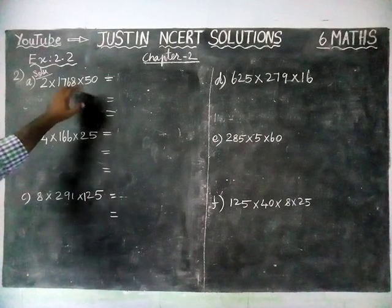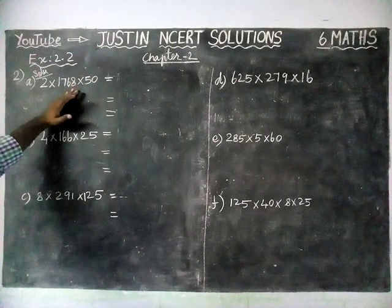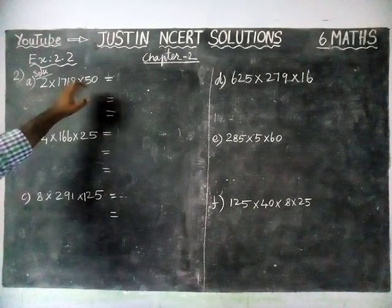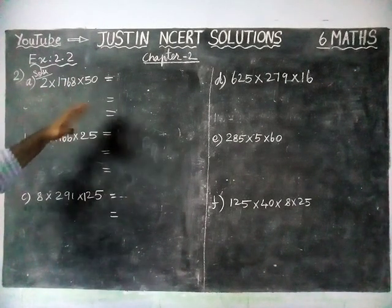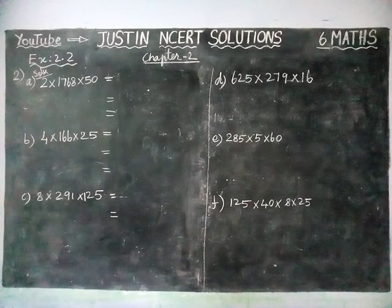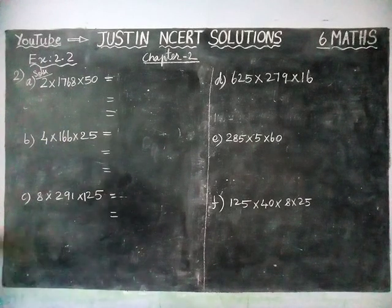If you are multiplying directly, you will find some difficulties. But if you are interchanging the places, we can get a multiple of 100 or 10, and we can find the answer easily.